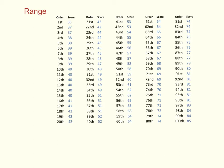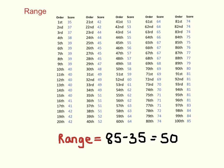The first measure of variability is very simple — it's the range. It's simply the distance between the first and the last score, which equals 85 minus 35, which equals 50. So the range is literally the range of values over which the data set ranges.